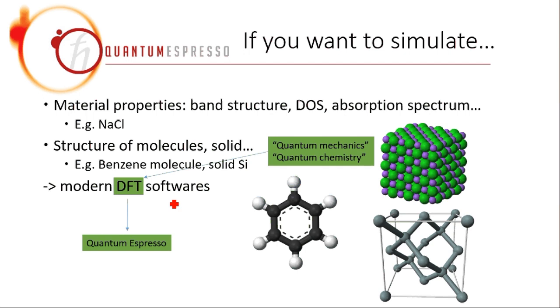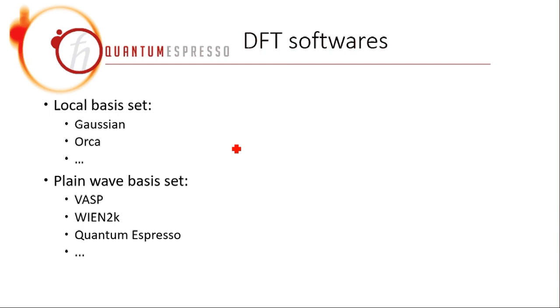For DFT calculations, you have to first choose the basis set. You have basically two choices: one is the local basis set, one is the plane wave basis set. The local basis set means that you express the wave function with the superposition of the local atomic wave function. And this is where the name comes from, this local basis set.